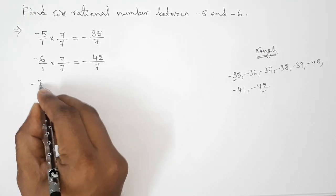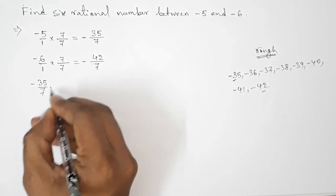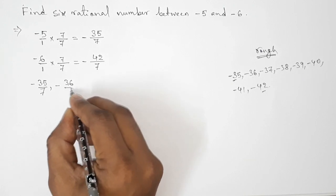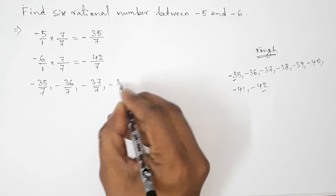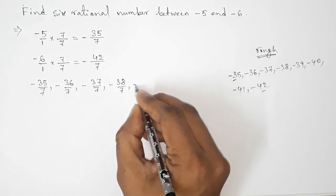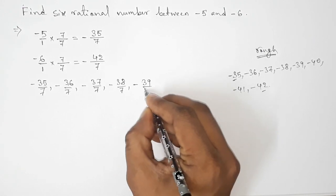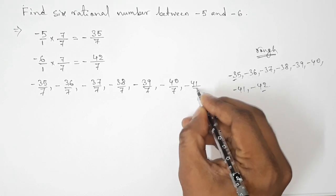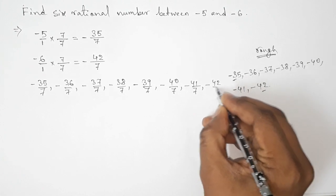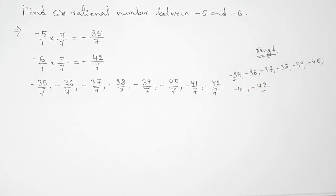So now forming all the negative integers, all the rational numbers here. First, so first one is minus thirty-five by seven, then minus thirty-six by seven, then minus thirty-seven by seven, minus thirty-eight by seven, minus thirty-nine by seven, minus forty by seven, minus forty-one by seven, then minus forty-two by seven.